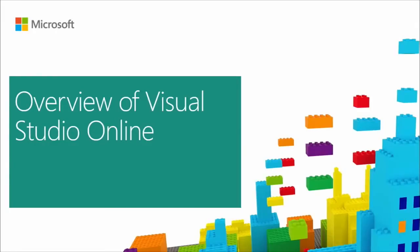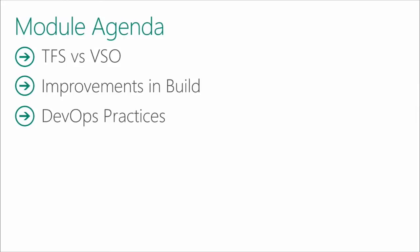We are going to start our overview module. We want to give you some background first — by no means are we going to cover every nook and cranny of Visual Studio Online, but we want to explain some things up front so we can more adequately explain build. First, what is TFS versus VSO and how does that dynamic work? Second, what are the improvements in build — which will be the main focus of the course. And then, what is this concept of DevOps practices in the title and how does it relate to what you'll learn?